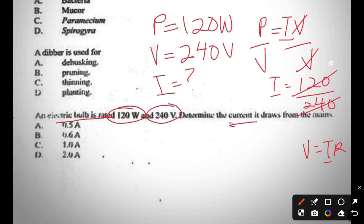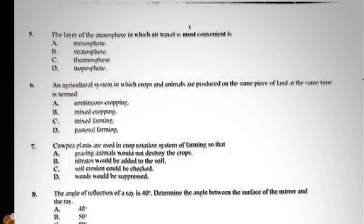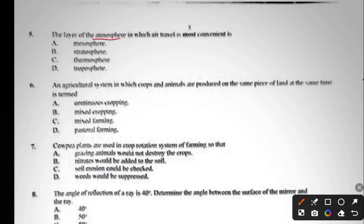We cancel out 120 and 240, so we have 0.5. So the answer to question four is A, 0.5 ampere. Question five: the layer of the atmosphere in which air travel is most convenient is mesosphere, stratosphere, thermosphere, or troposphere.